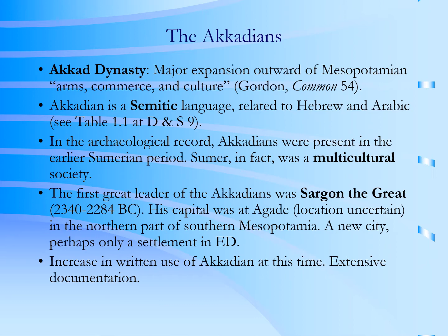While Lugal Zagezi didn't get too far in his empire building, the next group of rulers to come on the scene in Mesopotamia surely did. This is the Akkadian kingdom. Now the Akkadians had been around in the Sumerian tablets. During the Sumerian period, which we've just technically moved out of and into the Akkadian, the Akkadian language is present. The Akkadians and the Sumerians, whatever distinction there is between the two — other than linguistically — appear to live together in the southern part of Mesopotamia as a multicultural group of city-states. Now the Akkadians speak a Semitic language, Akkadian.